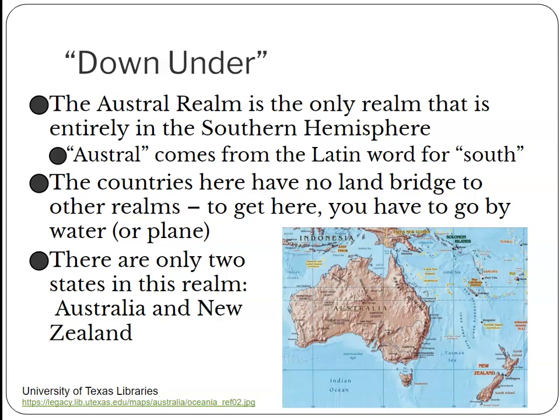There are other smaller islands — for example, Tasmania is an island that is part of the Australian country. New Zealand itself is made up of two islands, the North Island and the South Island, and there are lots of smaller islands that are part of Australia. We're not going to talk about the Pacific Islands as a whole today — that's a whole separate lecture. We'll be talking about Tonga, Fiji, and Samoa in a separate lecture.